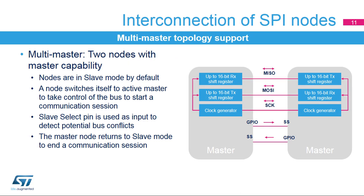SPI networks can operate in a multi-master environment. This mode is used to connect two master nodes exclusively. When neither node is active, they are by default in slave mode. When one node wants to take control of the bus, it switches itself into master mode and asserts the slave select signal on the other node through a GPIO pin. Both slave select or SS pins work as a hardware input to detect potential bus collisions between nodes, as only one can master the SPI bus at a single time.